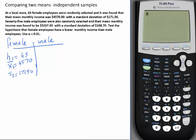Let's go to the second one. Male. I had 75, so N2 is 75. X bar 2, which is 5,267, and S2 is 168.70.